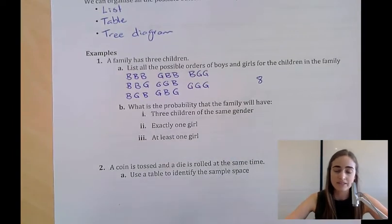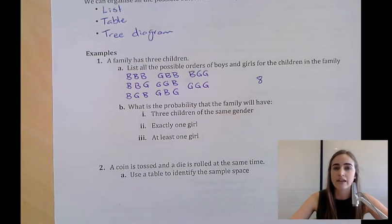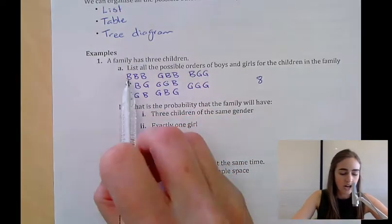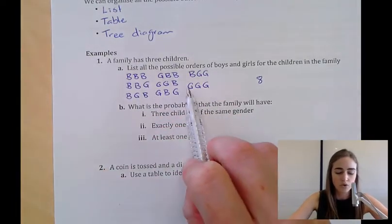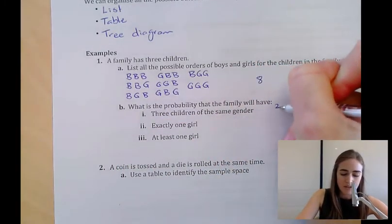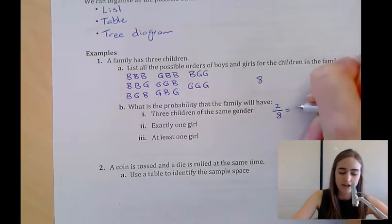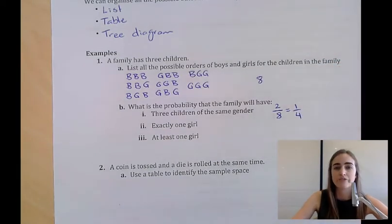What is the probability that the family will have three children of the same gender? That could either be boy, boy, boy, or girl, girl, girl. So there's two ways that could happen out of a total of eight, and we'd simplify our fraction down to one in four.